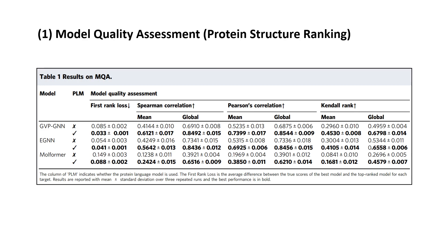Firstly, protein structure ranking involves assessing and ranking different candidate protein structure models to determine which one is most likely to represent the original biologically active conformation of the protein. The GNN models are evaluated by their capability of predicting the global distance test score of a candidate structure compared to the experimental structure of the target. They introduced the protein language models and found a substantial increase of accuracy in terms of Spearman, Pearson, and Kendall ranking of the 3D graph neural network models.